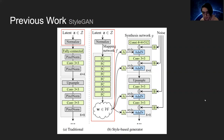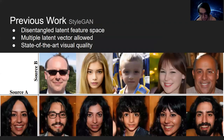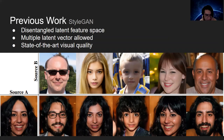The latent features from multiple latent vectors can be mixed to generate a mixed-style image, just like shown in the slides. StyleGAN also provides state-of-the-art image quality of synthesized images currently.